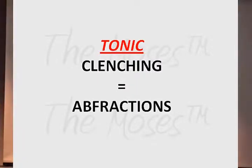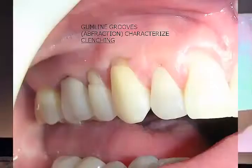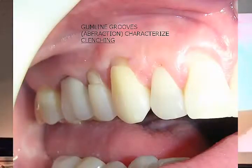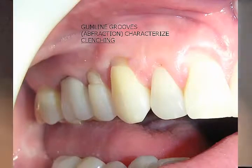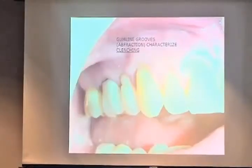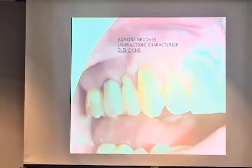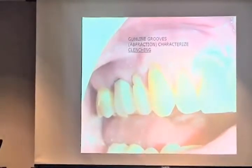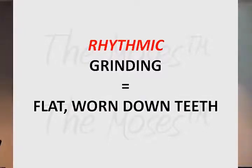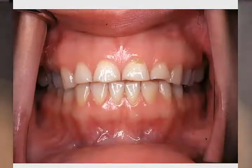Bruxism: there are two kinds — tonic clenching and rhythmic grinding. Abfractions are where the tooth actually bends, according to Gene McCoy who published the original article out of San Francisco. Rhythmic bruxism shows as flat, worn-down teeth. Sleep bruxism, according to G. Levine, is a movement disorder of the masticatory system characterized by teeth grinding and/or clenching.